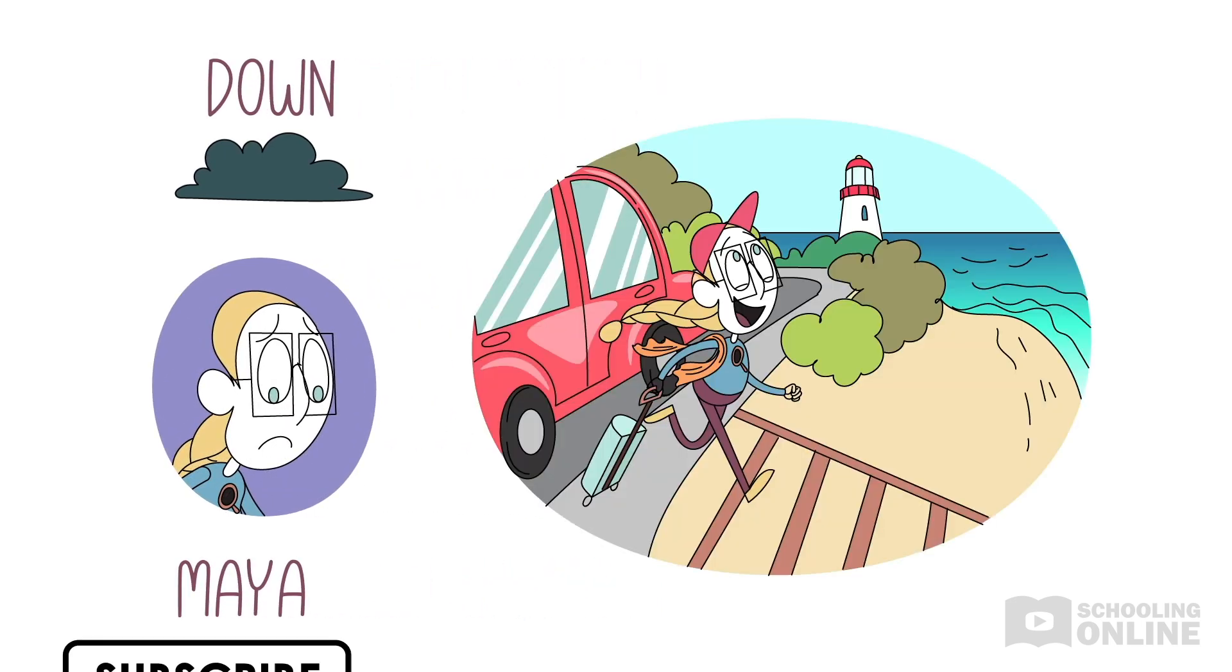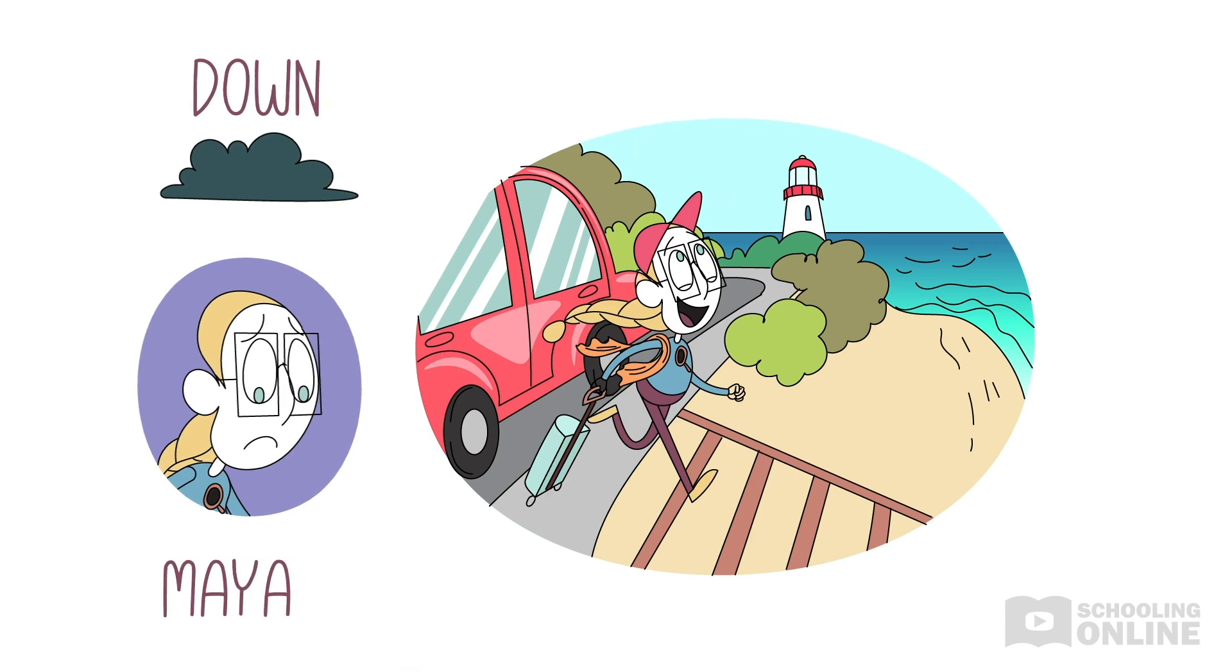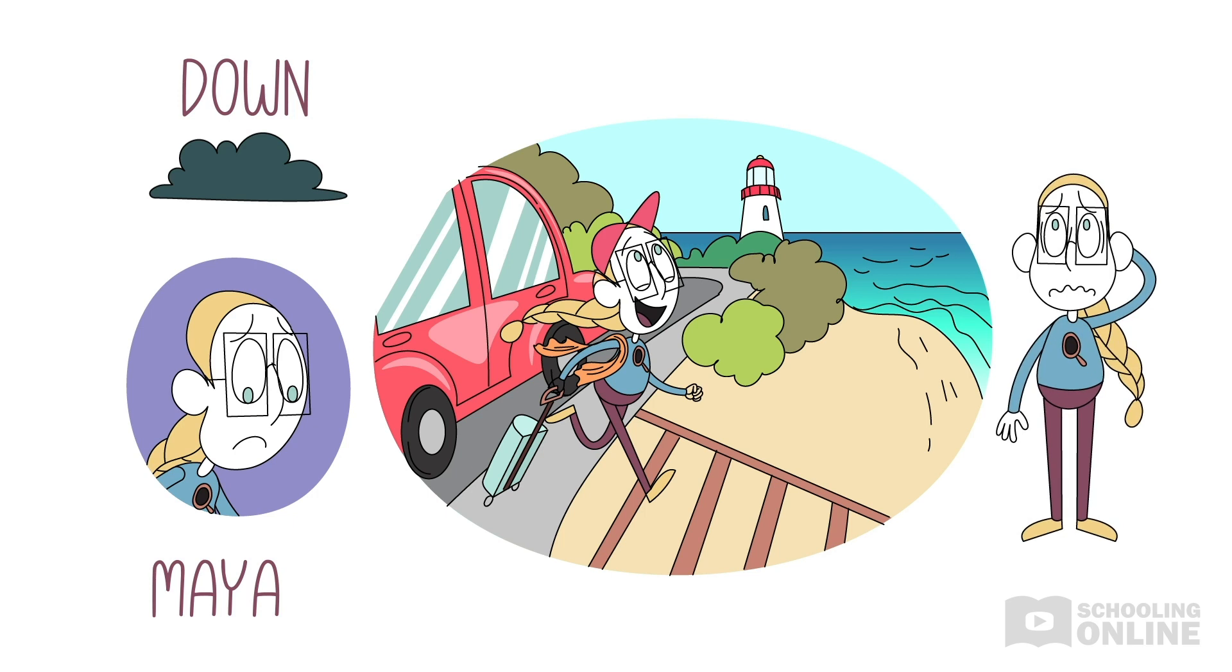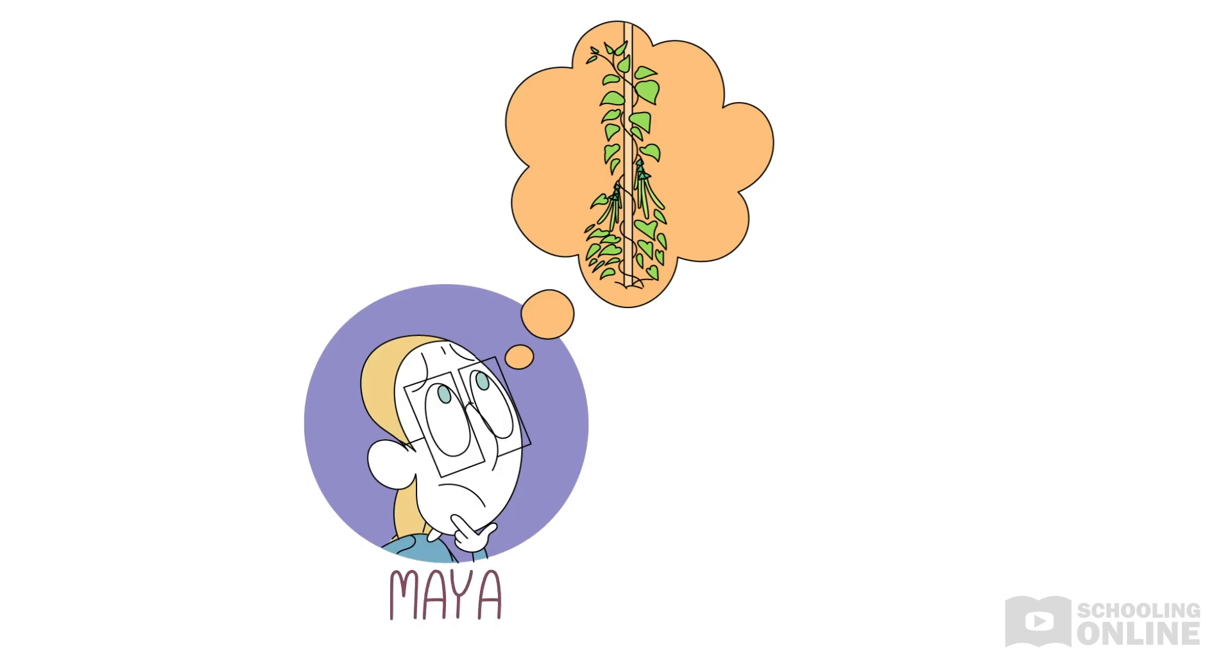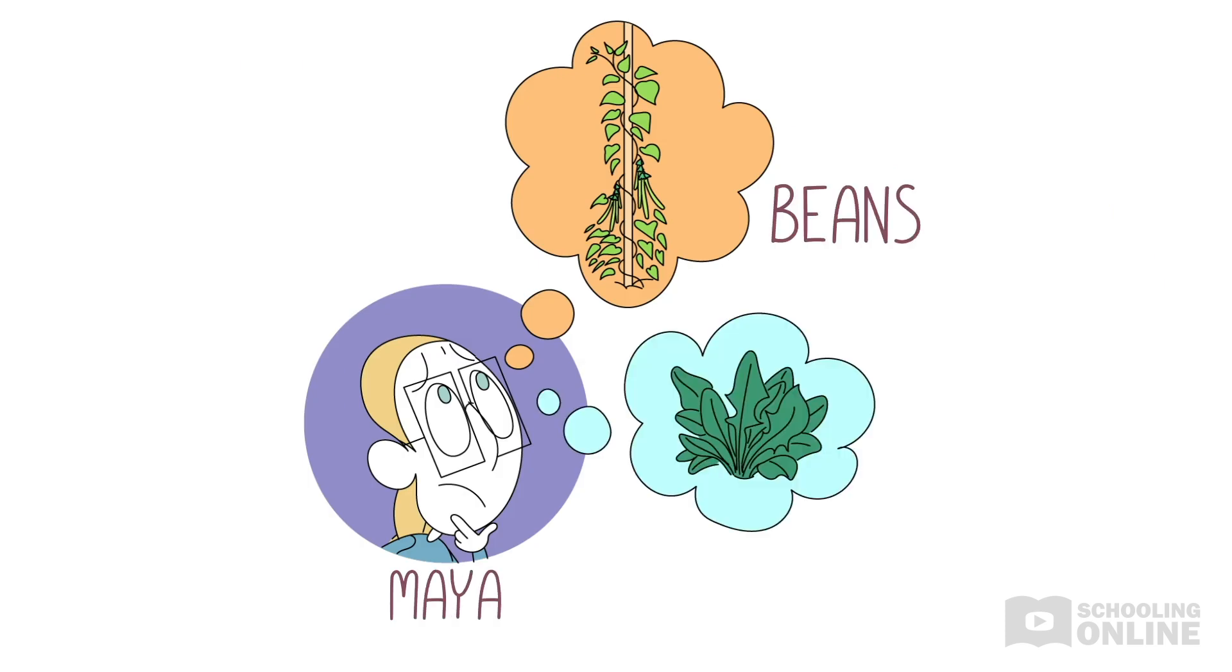This weekend she's going away to laugh and play. But she's not feeling so jolly. She's feeling rather worried. She thinks about her special beans and the tall and leafy greens. What is she going to do? She doesn't have a clue. Who will water her Veggie Patch?